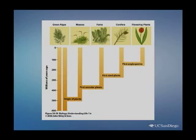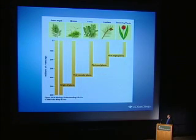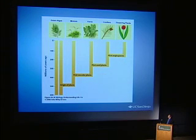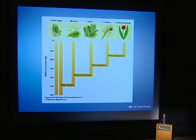It's estimated to be about 140 million years ago that the first flowering plants emerged. Even though it's a relatively recent time evolutionarily, the flowering plants now dominate the landscape — the majority of plants out there are flowering plants or angiosperms.